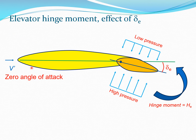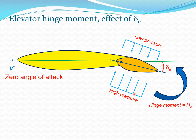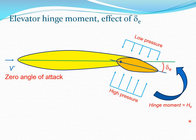Now let us look at the second situation. Here the tail section remains at zero angle — velocity is coming in front along the zero lift line — but the elevator section deflects through angle delta_e, which is the elevator deflection. Again there is a low pressure distribution on top and high pressure on the bottom, acting like an airfoil section, producing a differential pressure. The net result is a hinge moment H_e. So there are two sources of hinge moment H_e: the tail angle alpha_t and the elevator deflection delta_e.